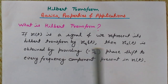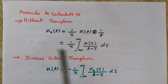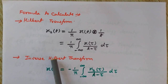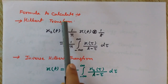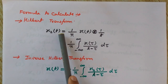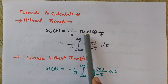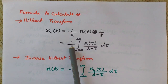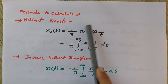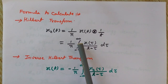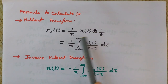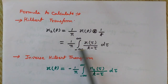Mathematically, the Hilbert Transform is represented as follows. The formula to calculate the Hilbert Transform is: x̂(t) equals (1/π) · x(t) convolved with (1/t), which can be written as (1/π) · integral from minus infinity to infinity of x(τ) divided by (t minus τ) dτ. In this way, you can easily calculate the Hilbert Transform of any signal x(t).